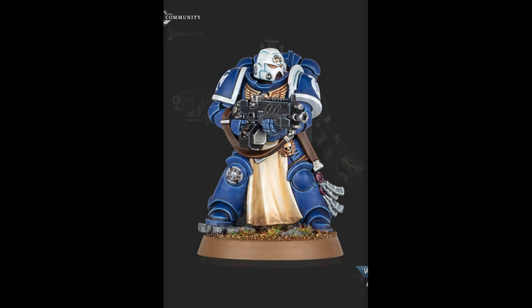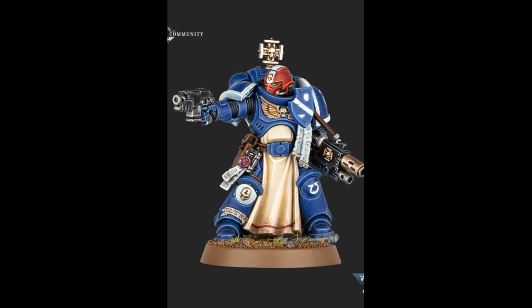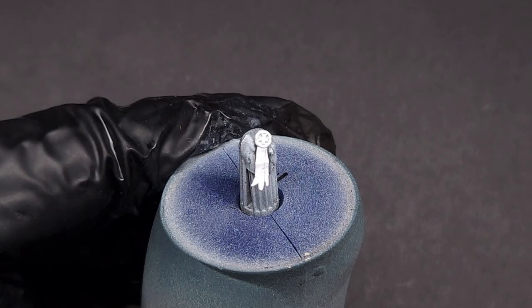But don't worry, I'm going to show you how to paint these things in three steps. Let's do it. So here we are, this is a purity seal from the Black Templars upgrade kit. This was the only one I had that wasn't already attached to a miniature; I figured that'd be a little less distracting and allow my camera to focus.